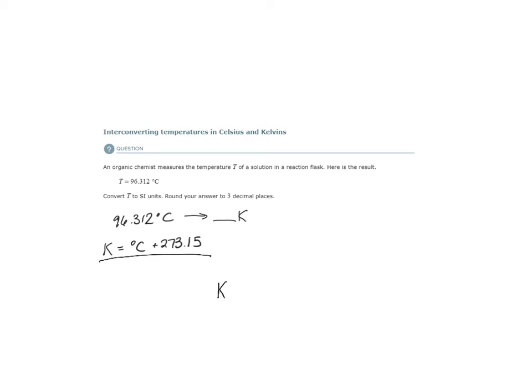So the temperature in Kelvins is going to be equal to 96.312 plus 273.15. That is going to be equal to 369.462 Kelvins.